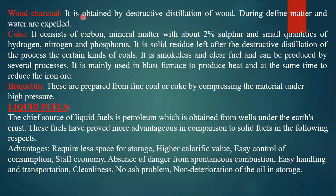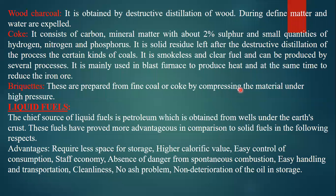Secondary solid fuels include wood charcoal, coke, and briquets. Wood charcoal is obtained by destructive distillation of wood, during which moisture and volatile matter are expelled. Coke consists of carbon, mineral matter, about 2% sulfur, and small quantities of hydrogen, nitrogen, and phosphorus; it is the solid residue after destructive distillation of certain kinds of coal and is a smokeless, clean fuel. Briquets are prepared from fine coal or coke by compressing the material under high pressure.